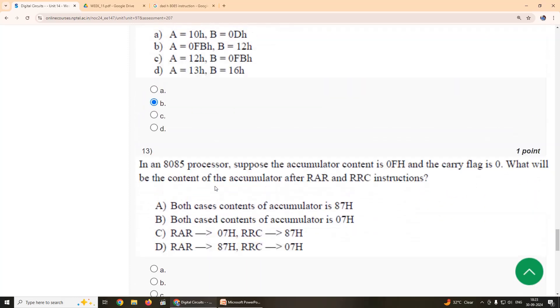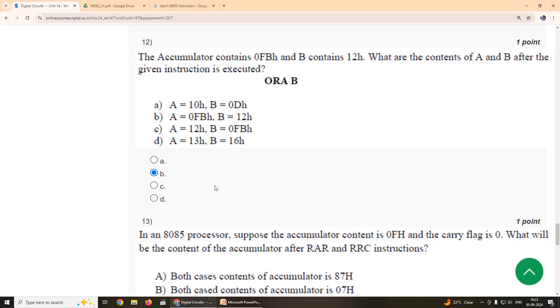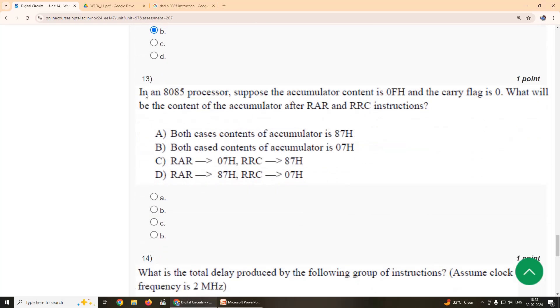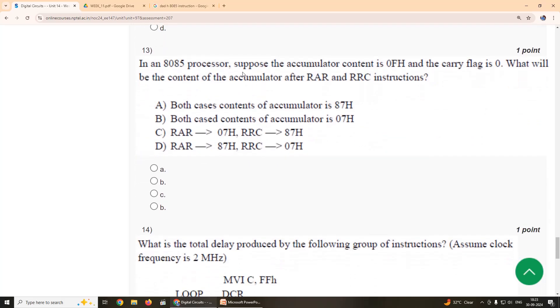Thirteenth one: In an 8085 microprocessor, suppose the accumulator content is 0F and the carry flag is 0. What will be the content of the accumulator after RAR and RRC instruction? So our suggestion is thirteenth is option C. So RAR is rotate through carry, rotate right through carry, and this is rotate right without carry. So option C is our suggestion.